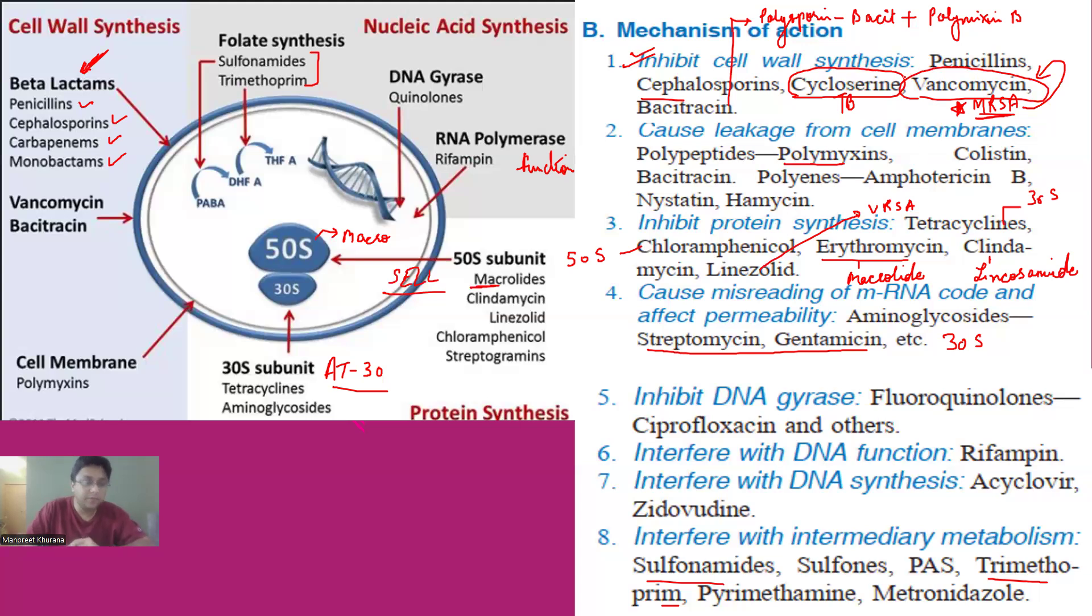So without getting confused, let's see the cell wall synthesis antibiotics are penicillin, cephalosporin, cycloserine, vancomycin, and bacitracin. Now, always remember bacitracin is a very important antibiotic because it is used in polysporin. Polysporin is the most commonly used drug here. And the polysporin is composed of bacitracin and polymyxin B.